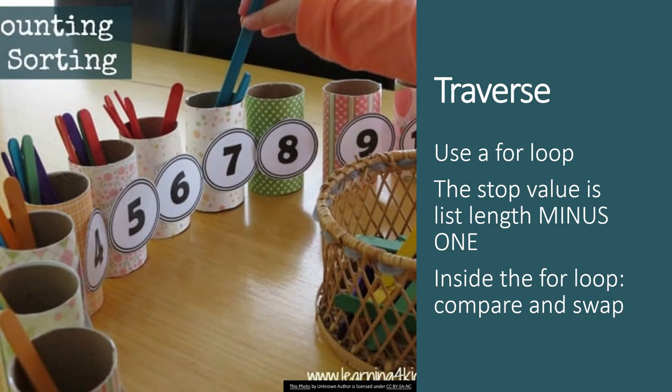And the next thing you have to do is put the whole thing that you've written so far inside a for loop, which will traverse the list from element 0 up to the list of the length minus 1.